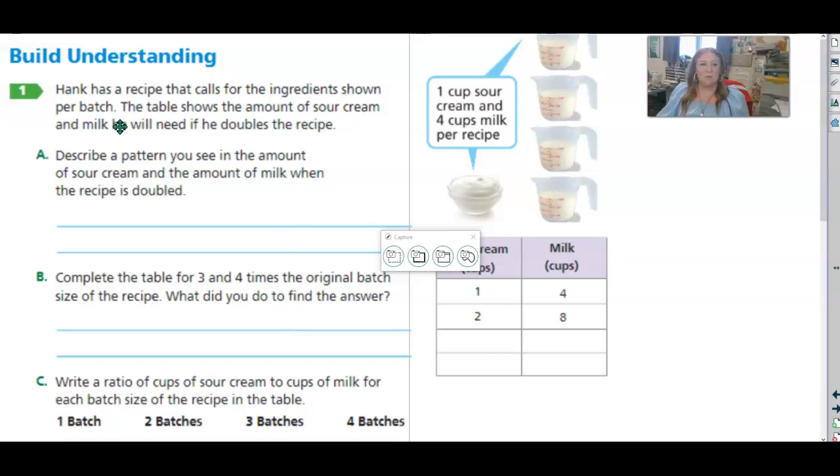For task 5.2 task one, it says that Hank has a recipe that calls for the ingredients shown per batch. One cup of sour cream, four cups of milk.